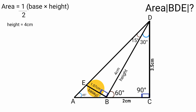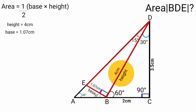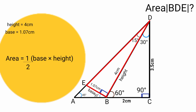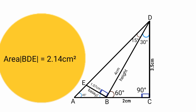Since line BE is the base of triangle BDE, the base is 1.07 centimeters and the height is 4 centimeters. Substituting into the area formula: Area = ½ × base × height = ½ × 1.07 × 4 = 2.14. Therefore, the area of triangle BDE is 2.14 centimeters squared.